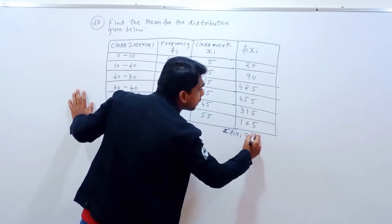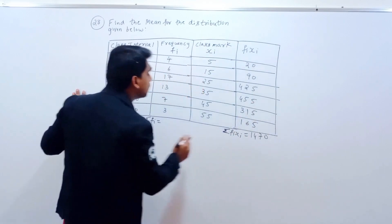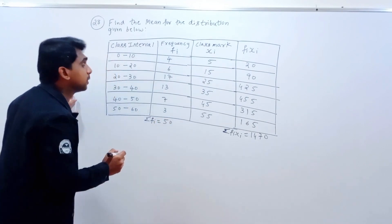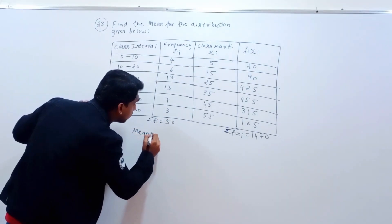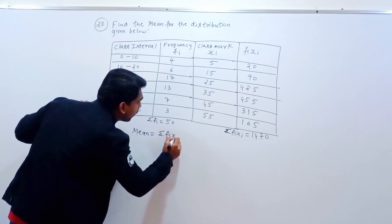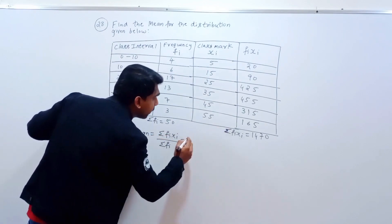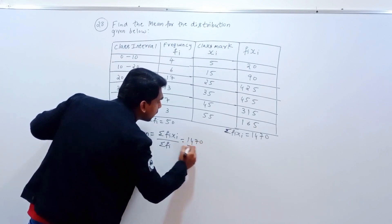You will add to get 1470. Here is the mean formula: sigma f i x i divided by sigma f i. Sigma f i x i is equal to 1470, divided by sigma f i which is equal to 50.